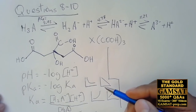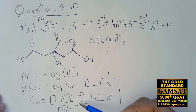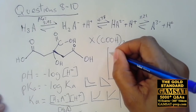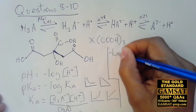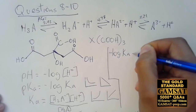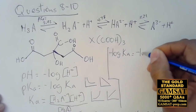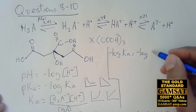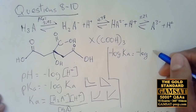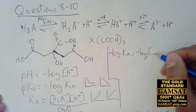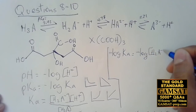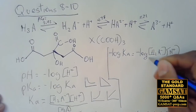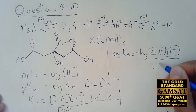The first step is to take the negative log of both sides of the Ka expression, since Ka involves hydrogen ions and we need pH. So we have: negative log of Ka equals negative log of [H₂A⁻][H⁺] / [H₃A].